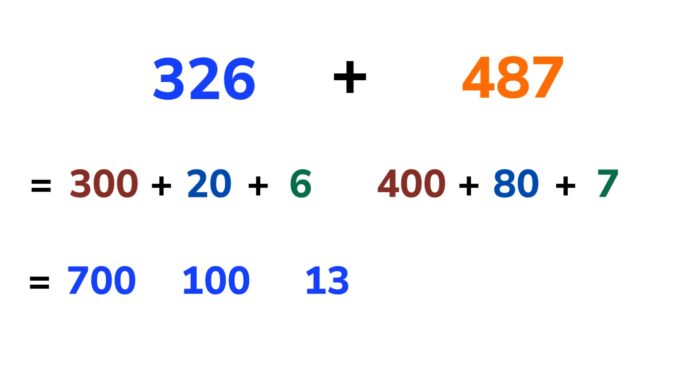Now we just combine all the parts. 700 plus 100 equals 800. 800 plus 13 equals 813. So, 326 plus 487 equals 813.